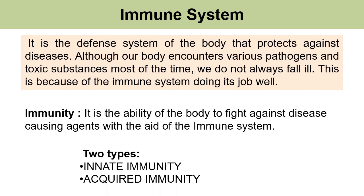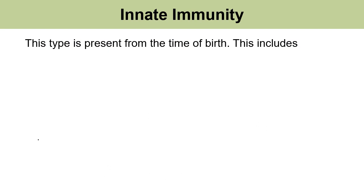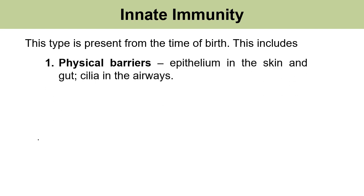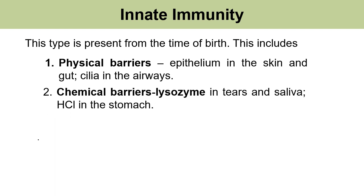There are basically two types of immunity: innate immunity and acquired immunity. Innate immunity is the inborn ability to fight against diseases. This includes physical barriers, for example epithelium in the skin and gut, cilia in the airways. Chemical barriers include lysozyme in tears and saliva, and hydrochloric acid in the stomach.